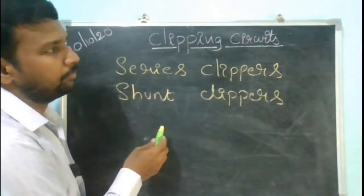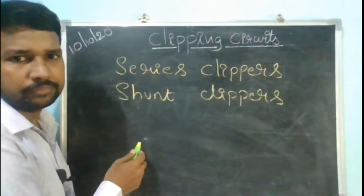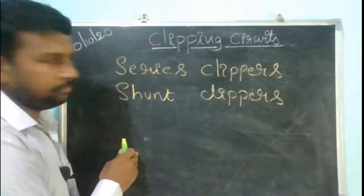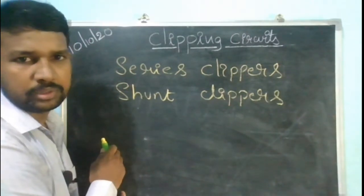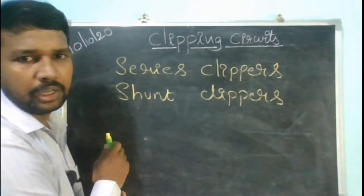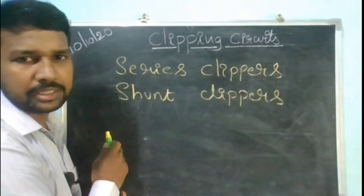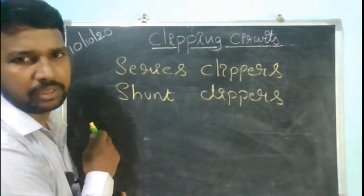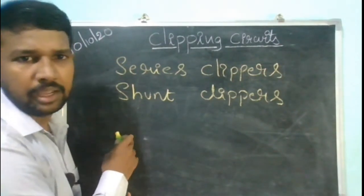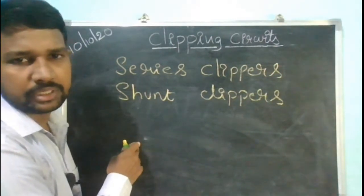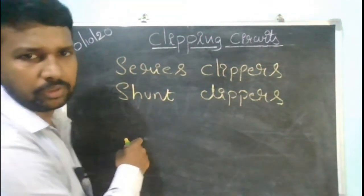These are the two types of clipping circuits that we will be studying from today onwards. In either of these two kinds of circuits, we can observe the fundamental and simplest non-linear circuit element, that is the diode. That is the reason why we have discussed briefly regarding this diode.